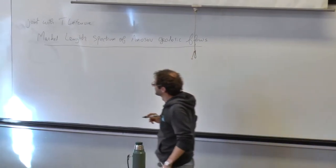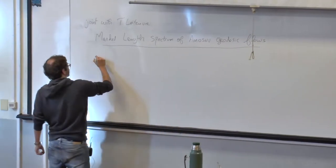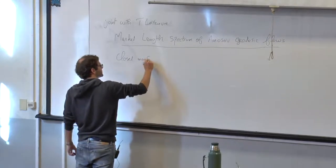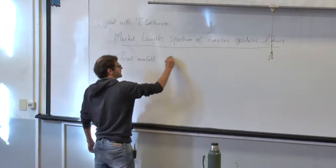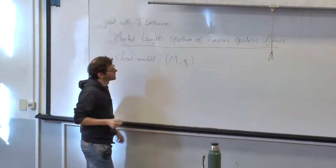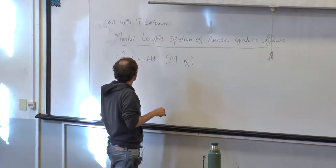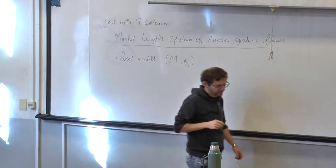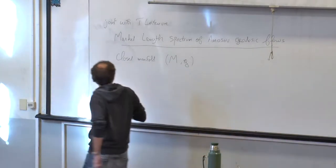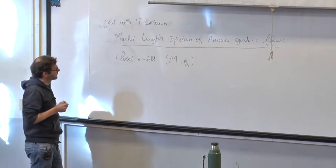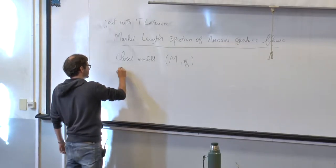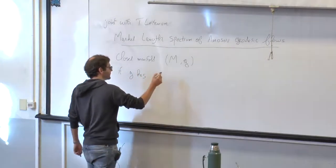Let me explain the problem first. We take a closed manifold equipped with a Riemannian metric g. We consider the set of closed geodesics. It is a well-known, very old theorem that if g has negative curvature — I will always write the sectional curvature as k — then in each free homotopy class there exists a unique closed geodesic.